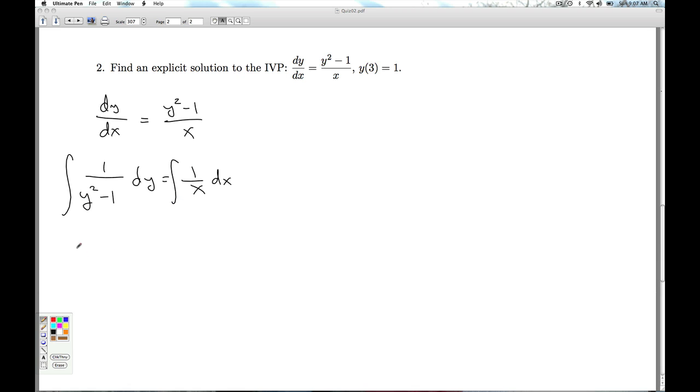For the one over y squared minus one, I can resolve that into partial fractions. And I can use the cover-up method on this because it's distinct linear factors. So I can use Heaviside's theorem to figure this out.